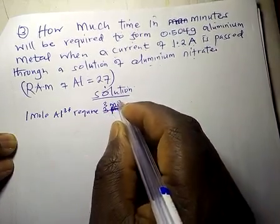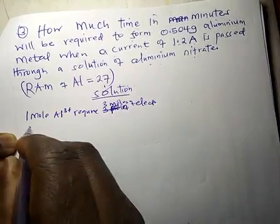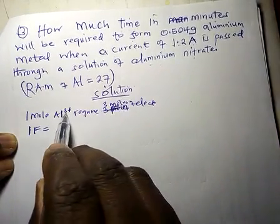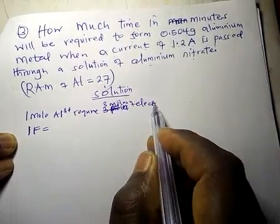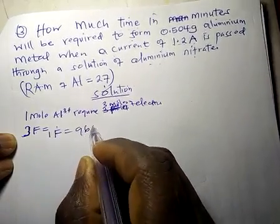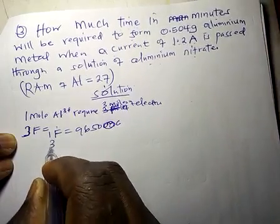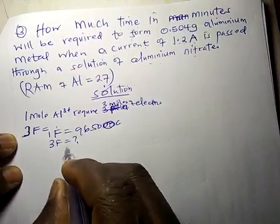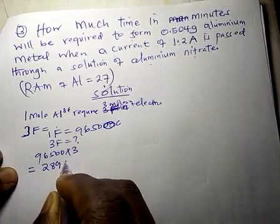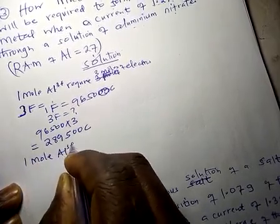We know 1 Faraday equals 96,500 coulombs. If there are 3 moles of electrons, then we have 3 Faradays. So 3 Faradays equals 96,500 times 3, which gives us 289,500 coulombs. This means 1 mole of Al³⁺ contains 289,500 coulombs.